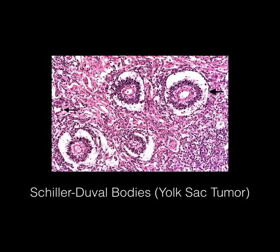Here's the Schiller-Duval body — we see multiple of them here. This is found in the yolk sac tumor. As I mentioned with the rarer tumors, know the histology because you're very likely to see one of these on your exam.